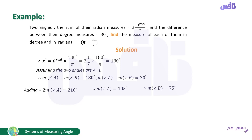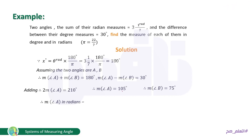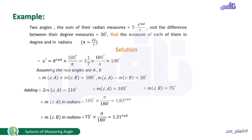Now convert to radian measure. Angle A in radians: 105 × π/180 ≈ 1.83 rad. Angle B in radians: 75 × π/180 ≈ 1.31 rad. This gives us both angles in degrees and in radians as required. With this example, we have reached the end of our lesson. Thank you and see you in another lesson.